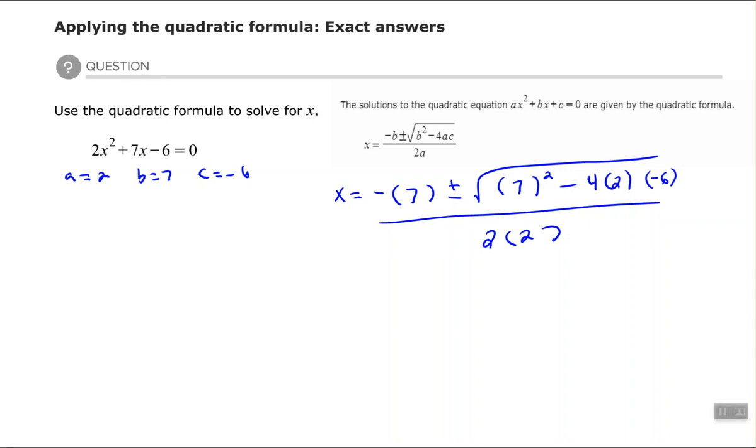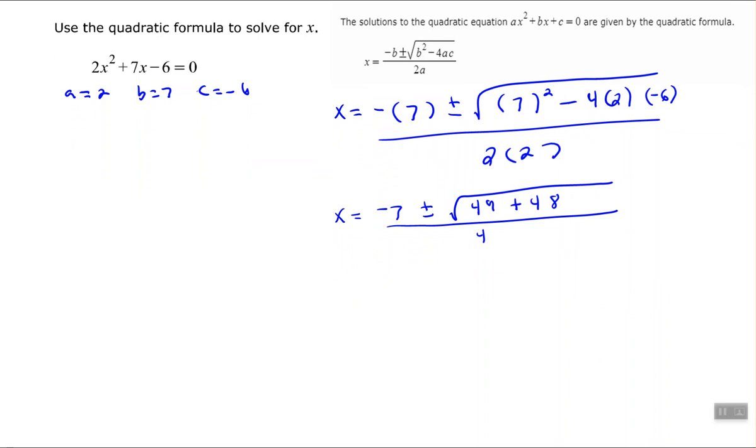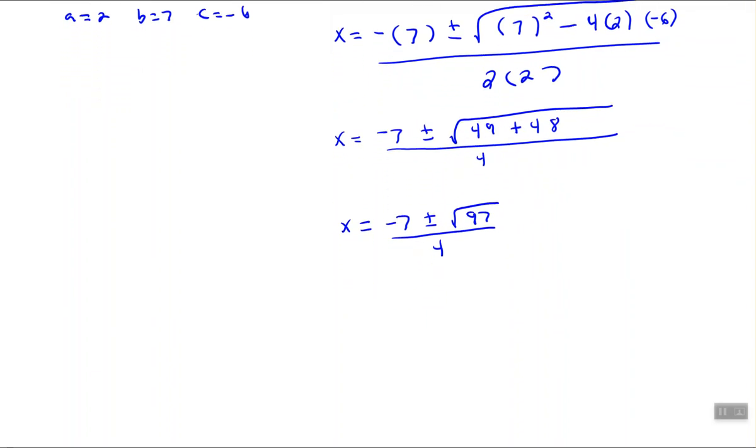And then after we substitute we start simplifying. So I have -7 plus or minus, 7² is 49. -4 times 2 times -6. Again, I have 2 negatives, so that's going to make a positive, all over 4. So 49 plus the square root of 49 + 48. So I simplify underneath my radical. And 97 cannot be simplified. We have x equals -7 + √97 all over 4, or x equals -7 - √97 all over 4.